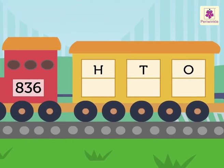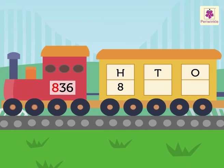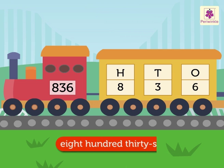as we can see, number 8 is placed in the hundreds column, number 3 is placed in the tens column, and number 6 is placed in the ones column. Thus, the three-digit number 836 is read and written as eight hundred thirty-six.